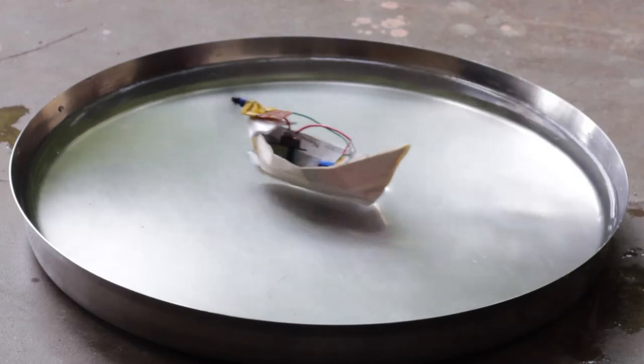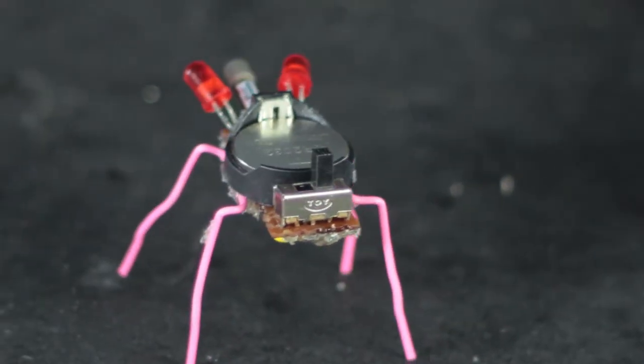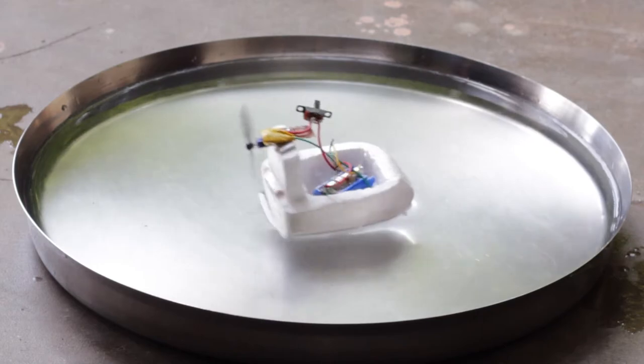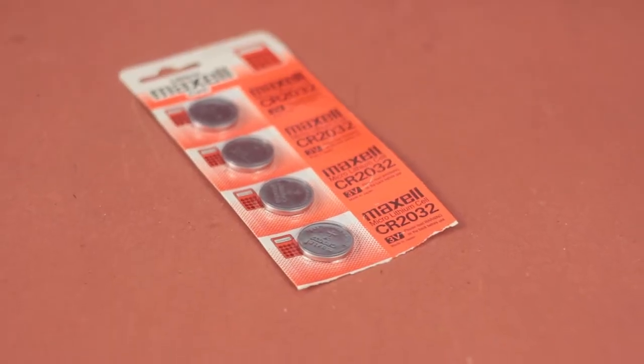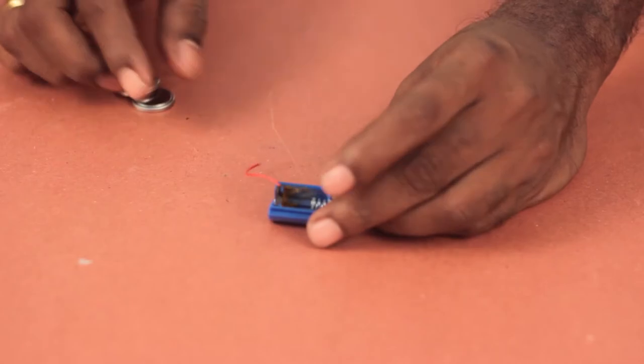You might have seen my videos on making small boats and tiny vibrabots. The links are in the description in case you want to check them out. If you notice, we have used button cells and making a holder for the cells is a bit of a pain.